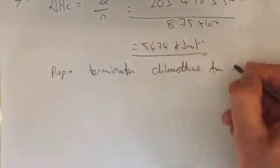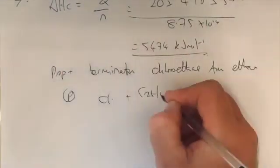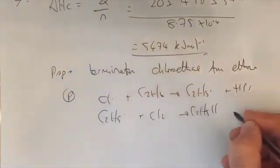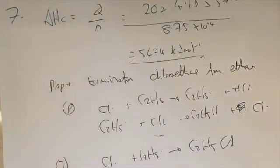This question, enthalpy of combustion, is Q over N. I've got 5, 4, 7, 4. It then wants propagation and termination, making chloroethane from ethane and chlorine. You can see them on the screen there. Don't forget termination. Two radicals, making a neutral molecule.